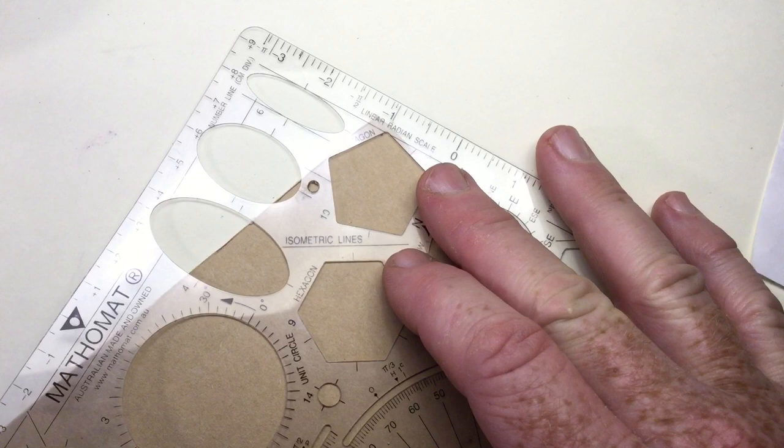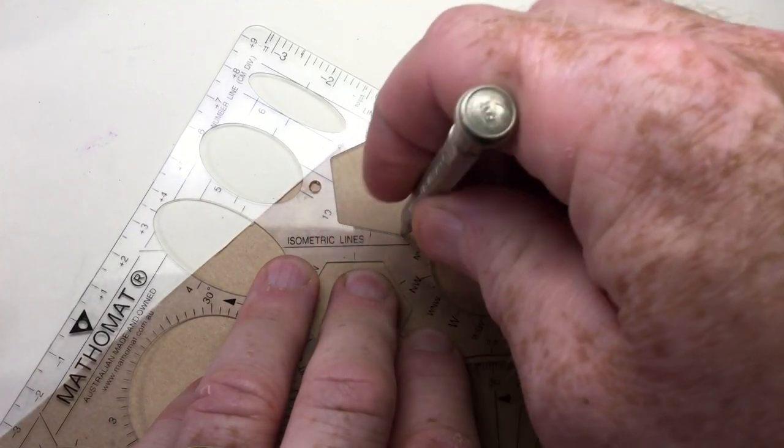A math set, or something similar, comes in handy for this part. Though if you would like me to do a video on how to make a pentagon with nothing more than an unmarked straightedge and a compass, let me know in the comments.